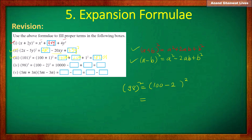So: the square of the first term (100), minus 2 × 100 × 2, plus the square of the second term (2). That gives 10,000 minus 400 plus 4.